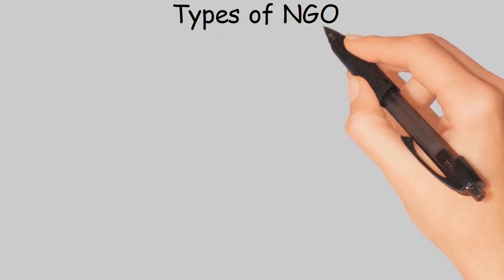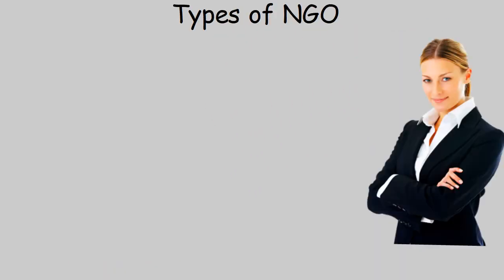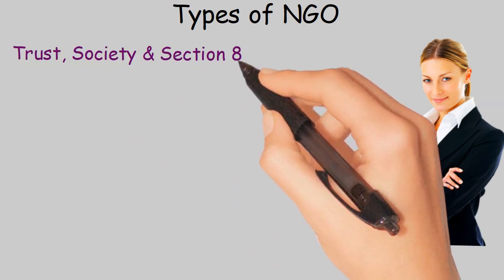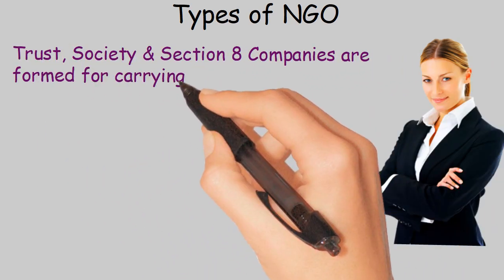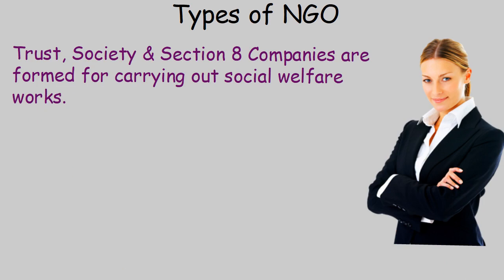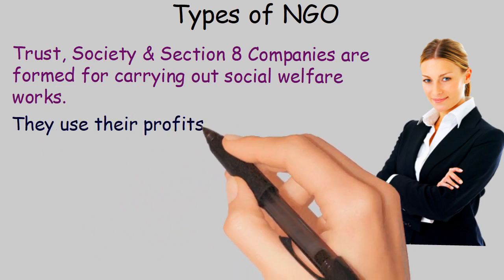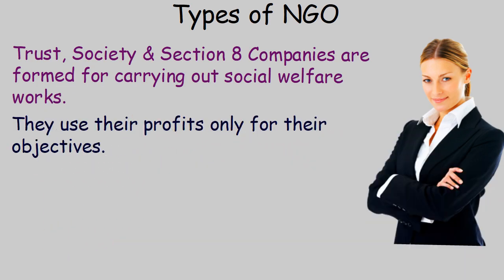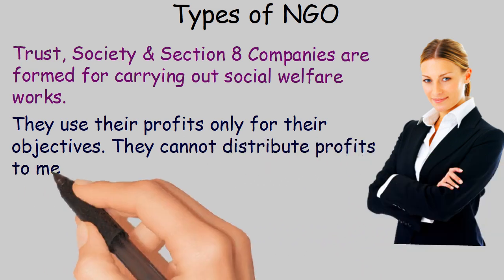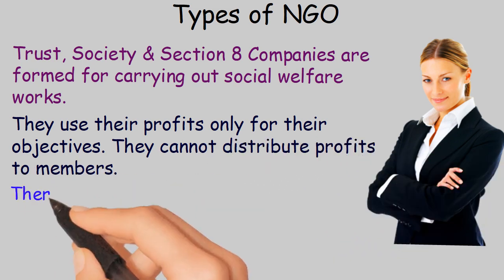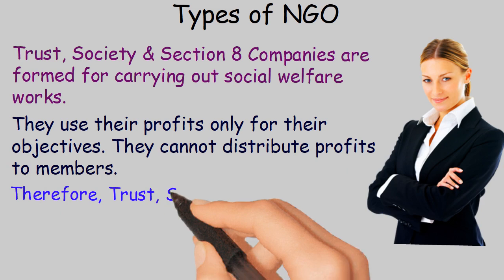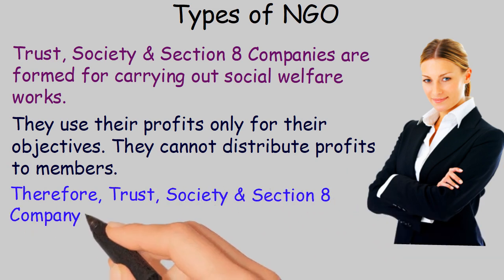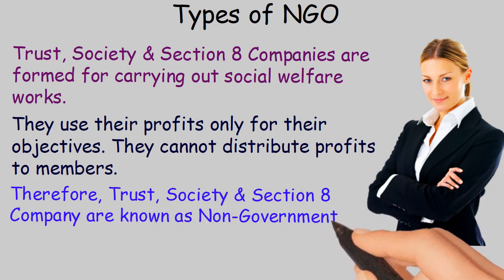Types of NGO. Trusts, Society, and Section 8 Companies are considered as NGOs as they are non-profit organizations. They are formed for carrying out social welfare works and use their profits only for their objectives. They cannot distribute profits to members. Therefore, Trusts, Society, and Section 8 Company are known as Non-Governmental Organizations.